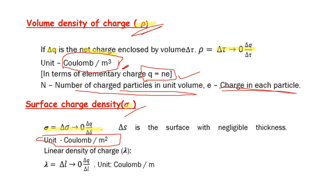Linear density of charge is denoted by lambda (λ). Lambda is equal to del q divided by del l, where del l is the element of length. The unit of linear density of charge is coulombs per meter (C/m).